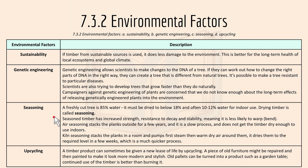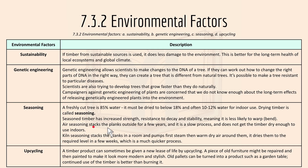For seasoning, a freshly cut tree is 85% water and it must be dried to 80% or below — often 10–12% for indoor use. Drying timber is called seasoning. Seasoned timber has increased strength, resistance to decay, and stability, meaning it is less likely to warp or bend.